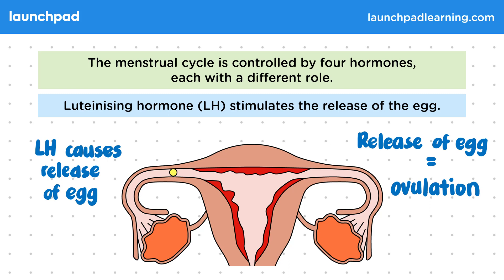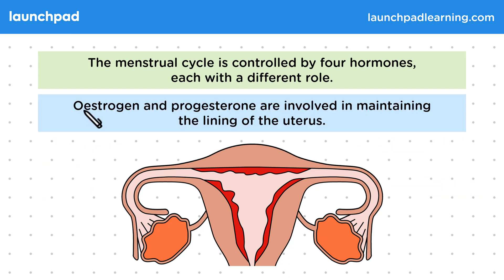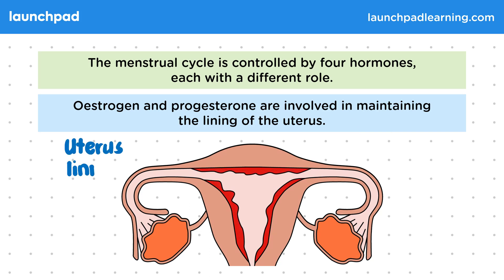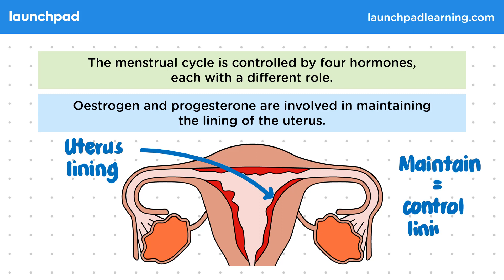Oestrogen and progesterone are involved in maintaining the lining of the uterus. In other words, they control the thickness of the uterine lining throughout the cycle. In this context, the word 'maintain' means helping to repair and control the thickness of the uterus lining.